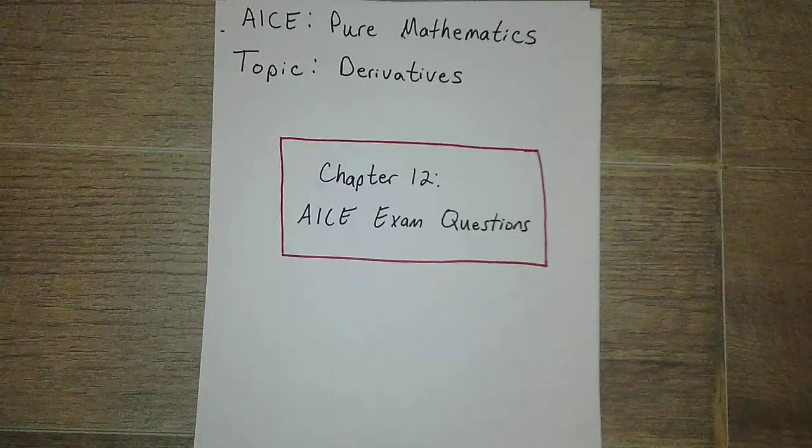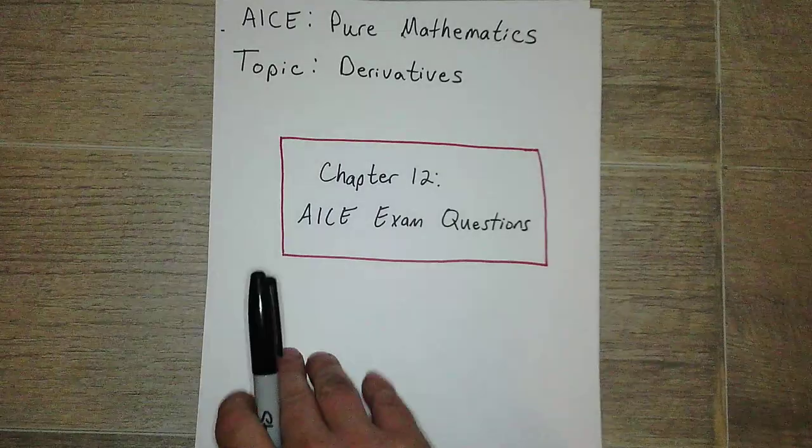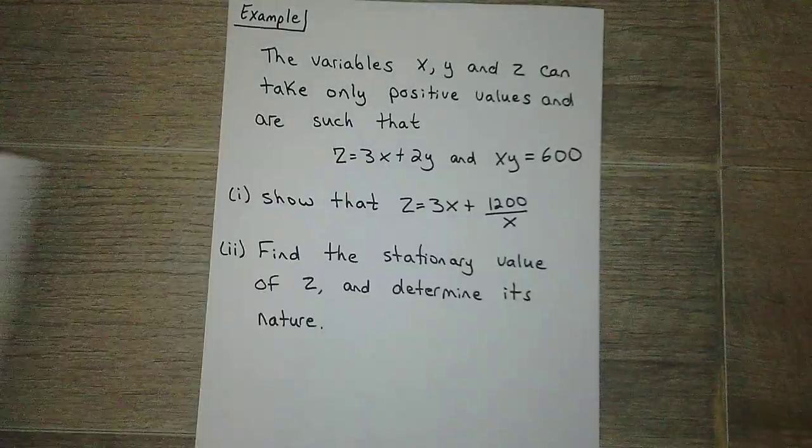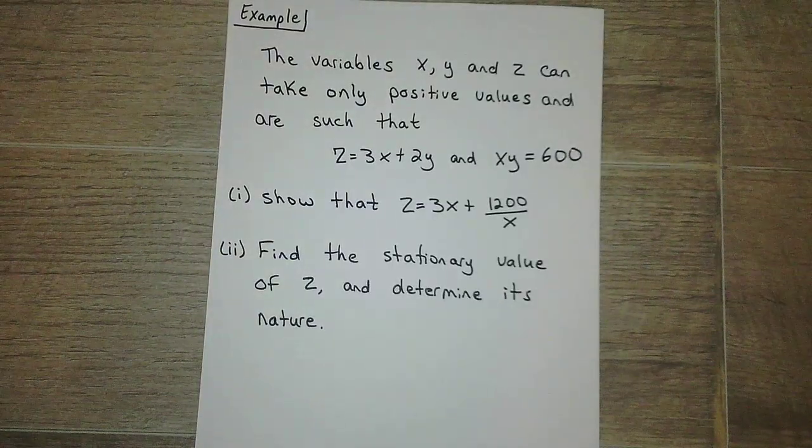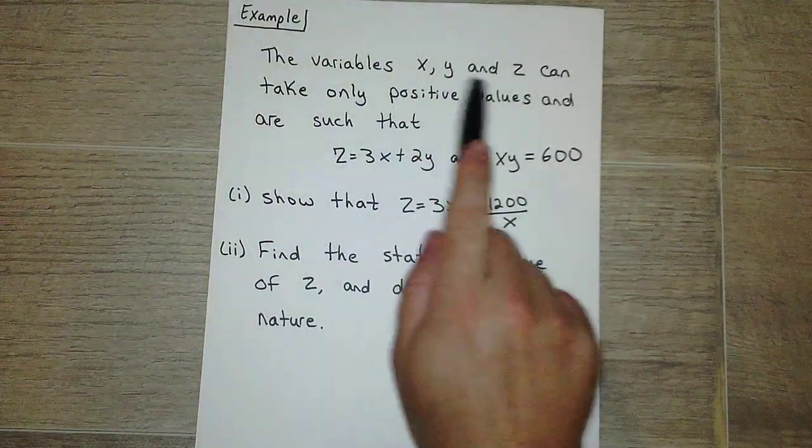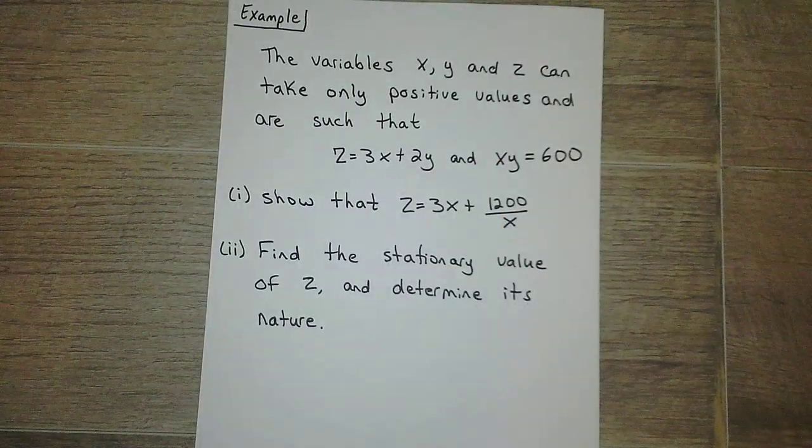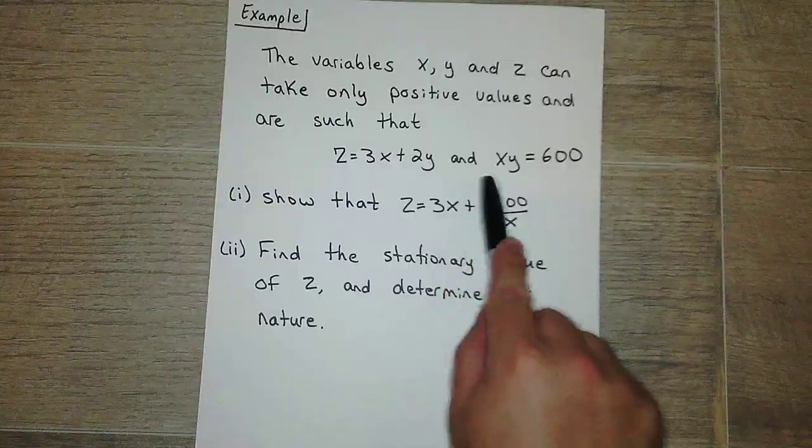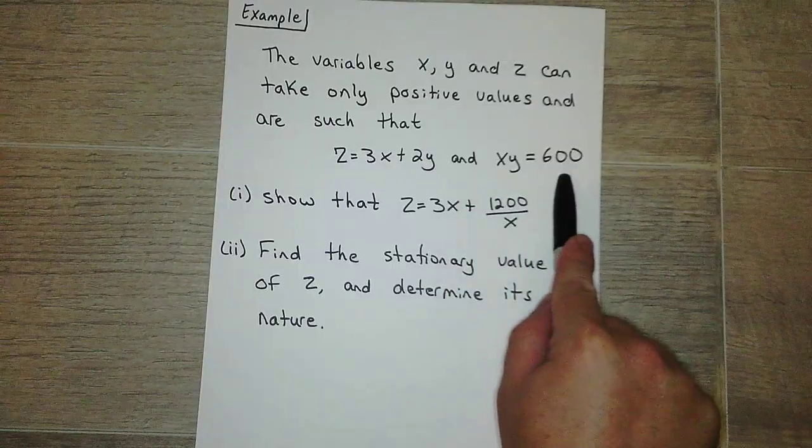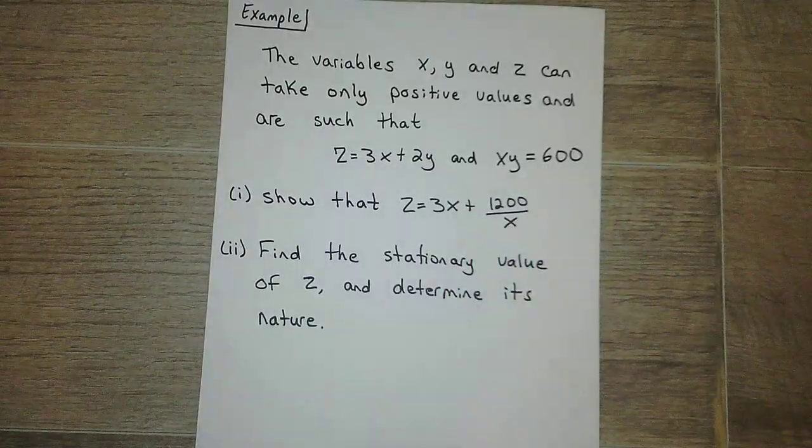Today's assignment is really just going to do this together. So it's going to be an exam question similar to some of the ones we've already seen. The variables x, y, and z can take on only positive values and are such that z equals 3x plus 2y and xy equals 600. Okay, so this is what we have to work with.